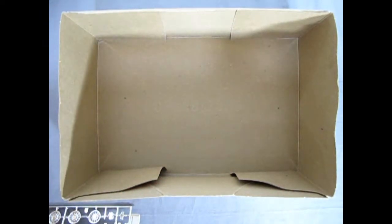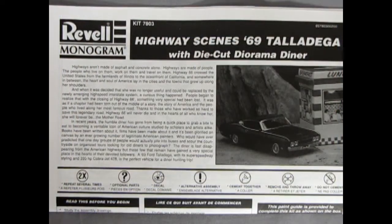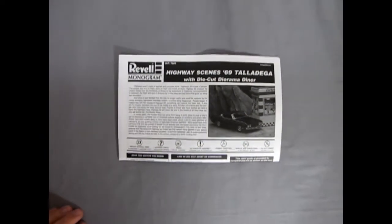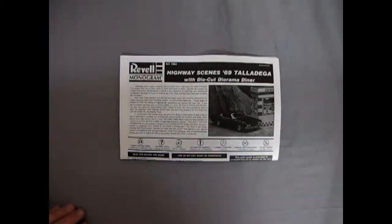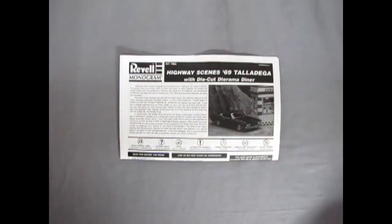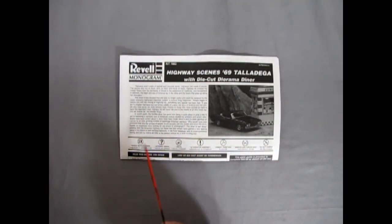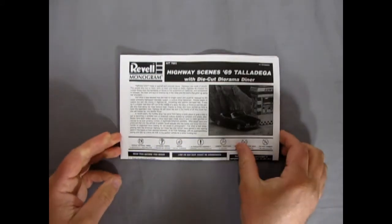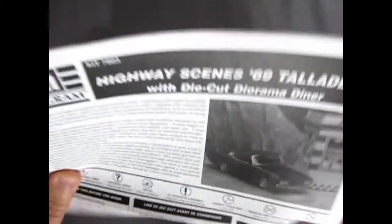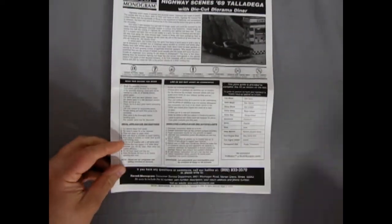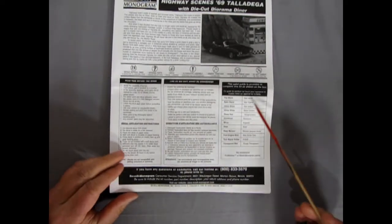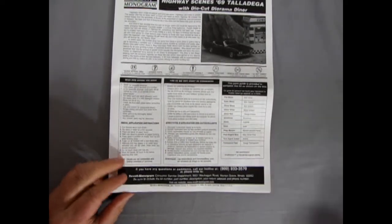So speaking of the box, let's remove it and let's take a look at our instructions. Here we are with our highway scene 69 Ford Talladega and the diner instructions, and of course we get a big history in here. But the main thing we are concerned with is the engine which of course is a Cobra Jet 428, the perfect vehicle for a diner hunting trip. And if you're also hunting down the Super Birds you can beat one in the driving parking lot anyway.